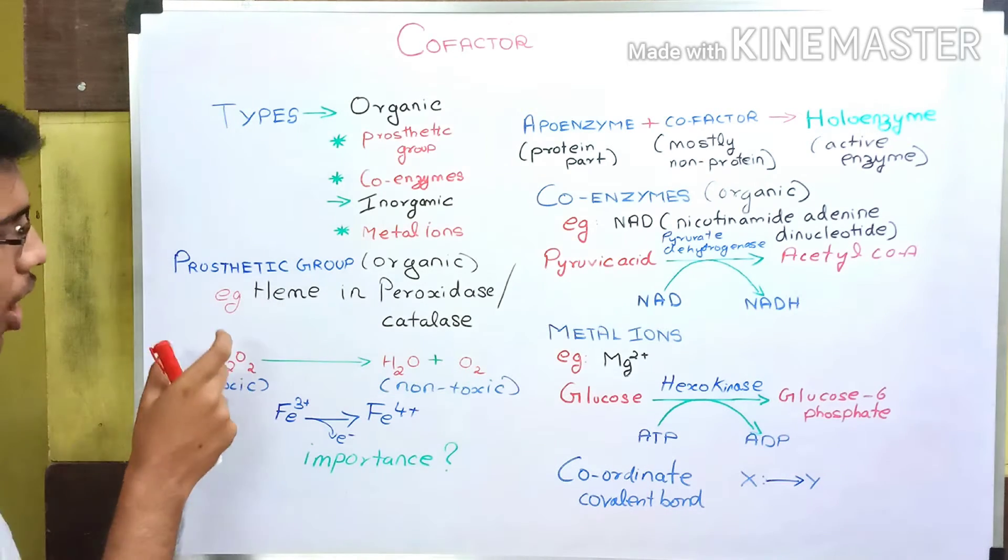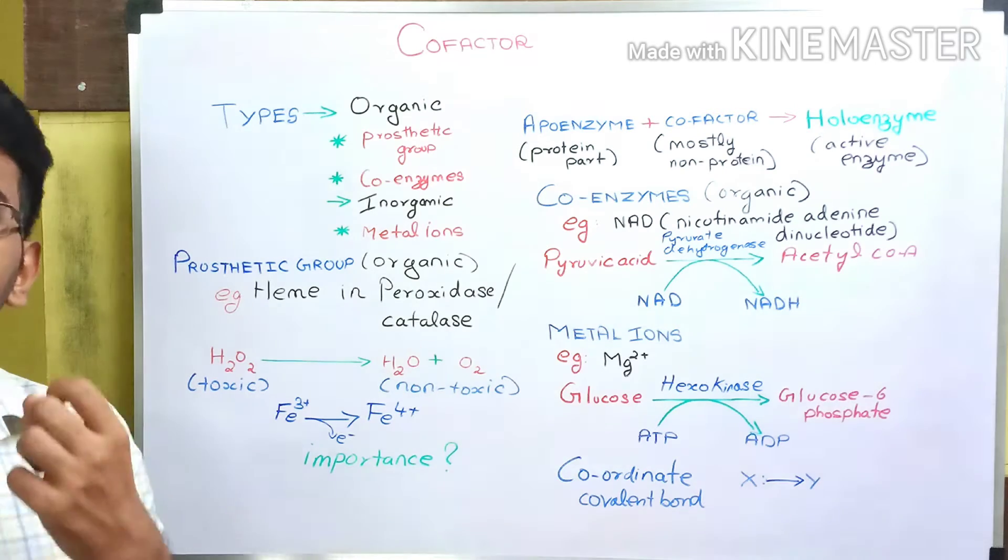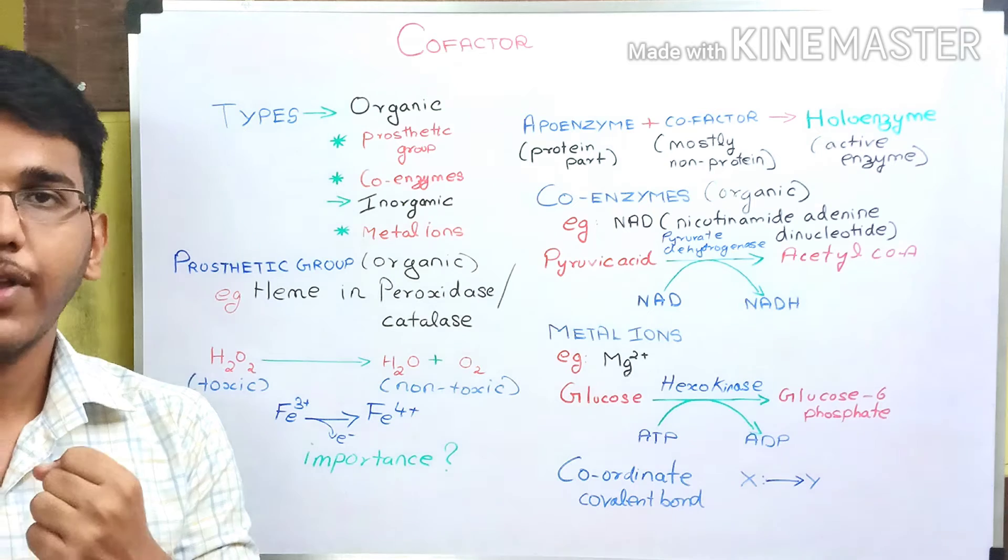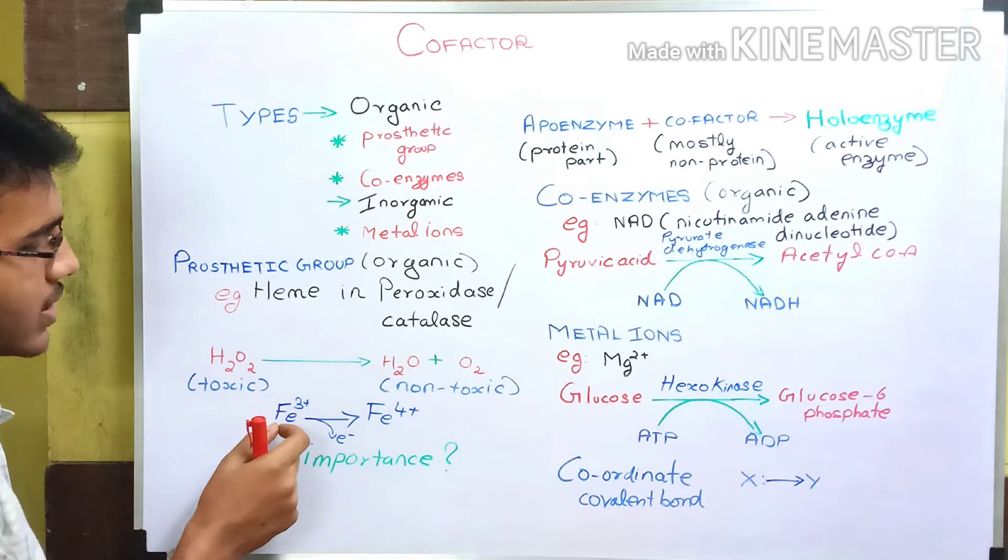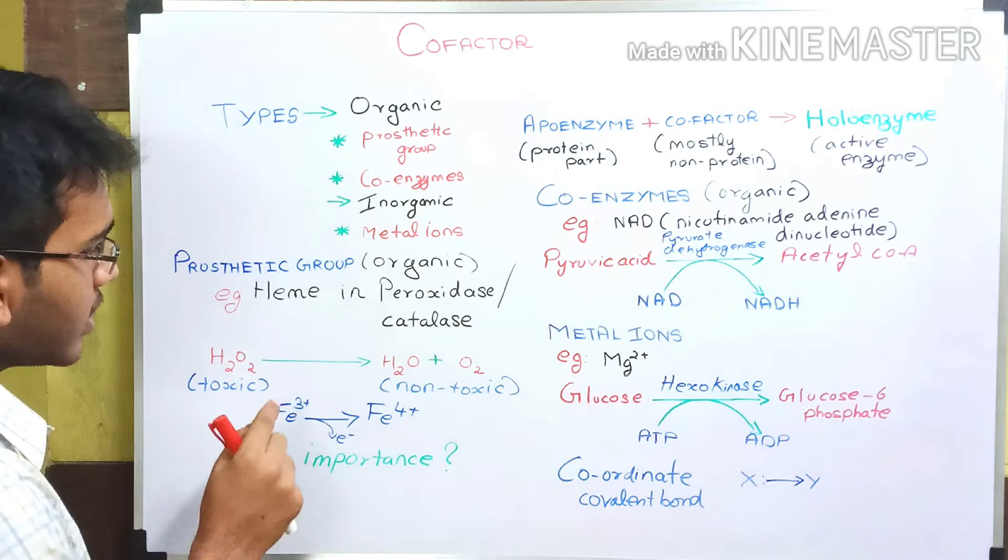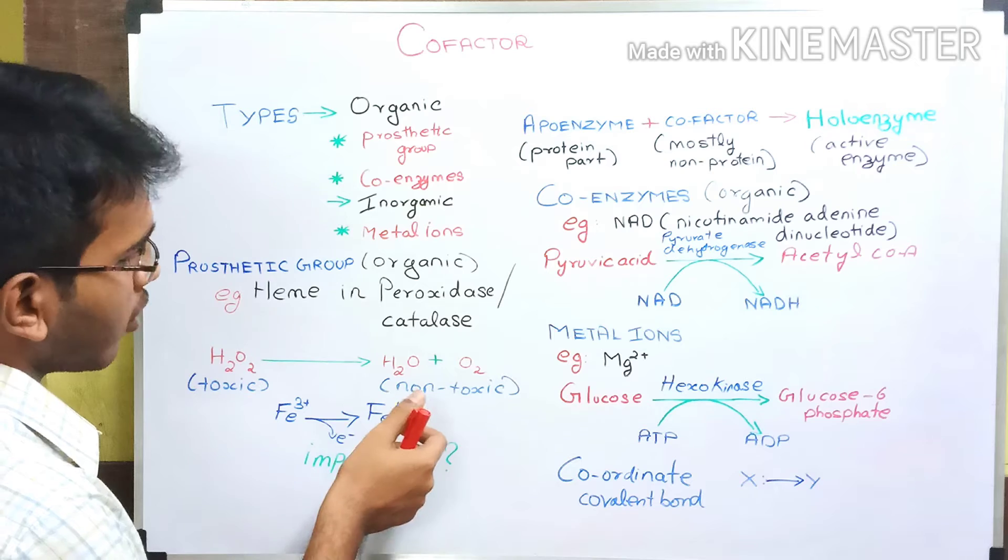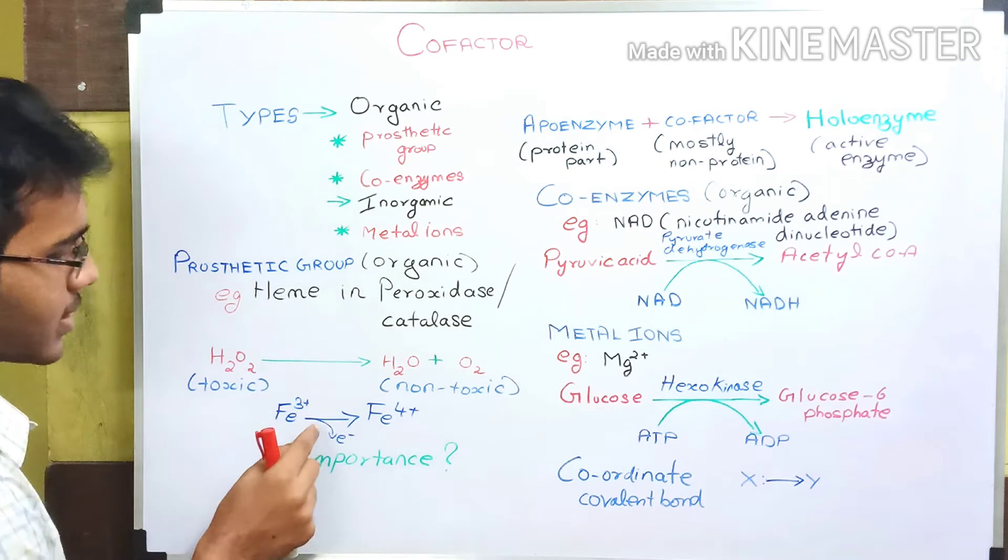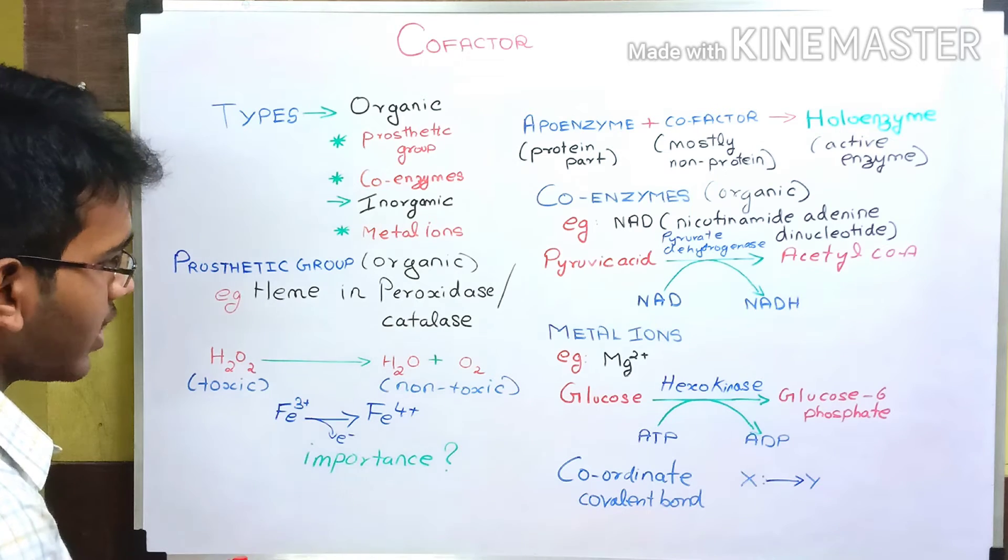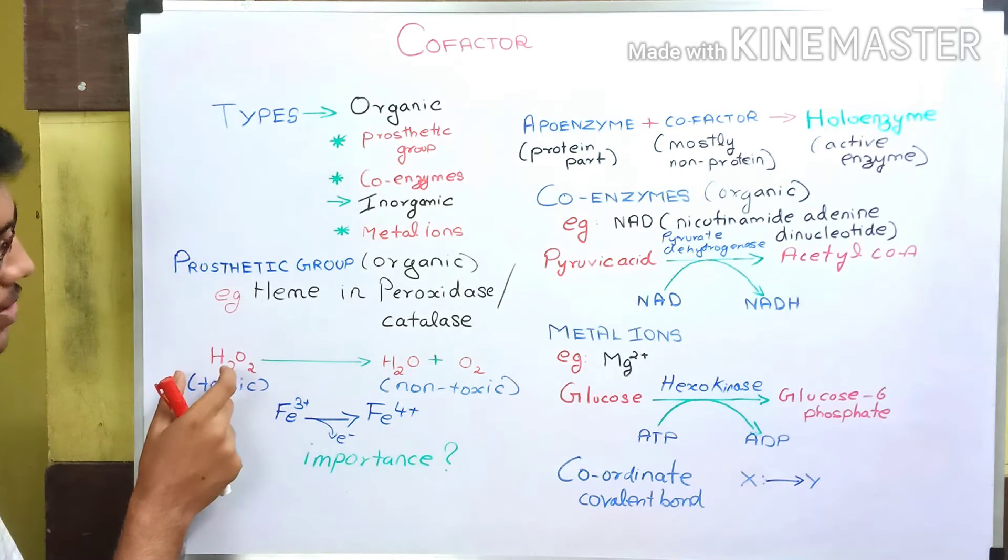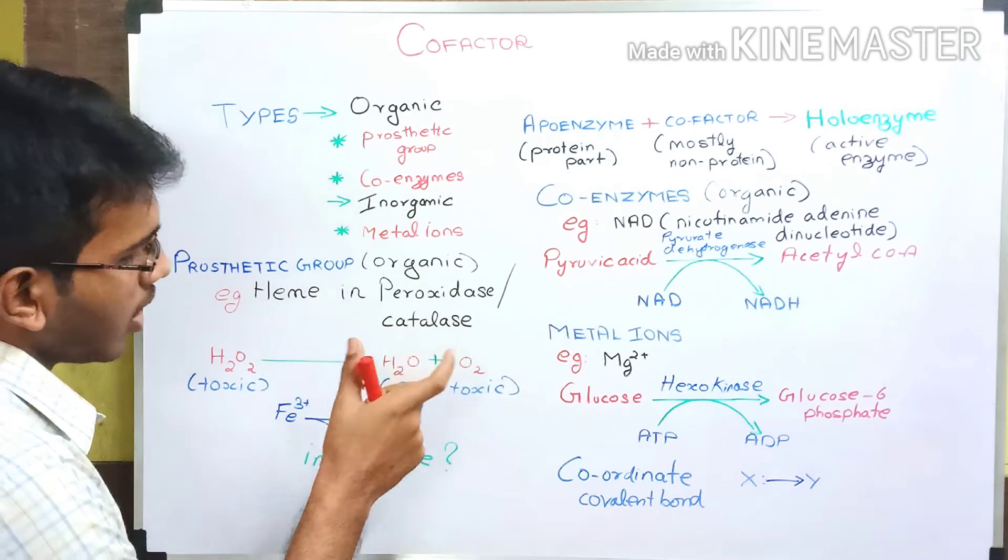Hydrogen peroxide on reduction produces water and oxygen. Reduction needs electrons because reduction is the gain of electrons. That electron is provided by the Fe3+ ion present in the heme group. This Fe3+ ion loses an electron and forms Fe4+ ion and becomes oxidized. And this electron produced as a result of oxidation of Fe3+ ion reduces the hydrogen peroxide and forms water and oxygen, which is non-toxic.